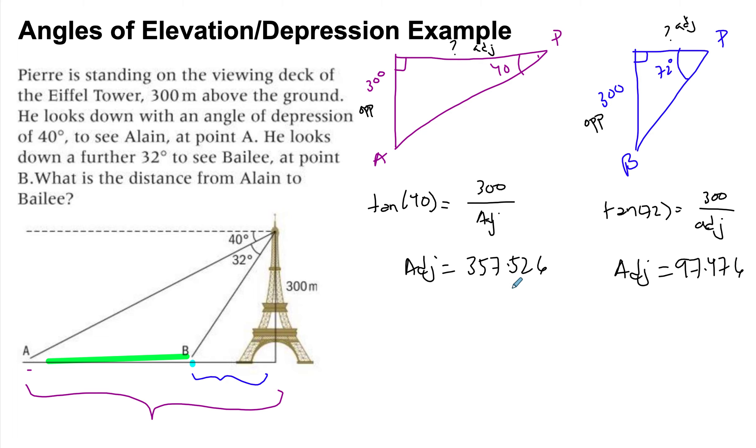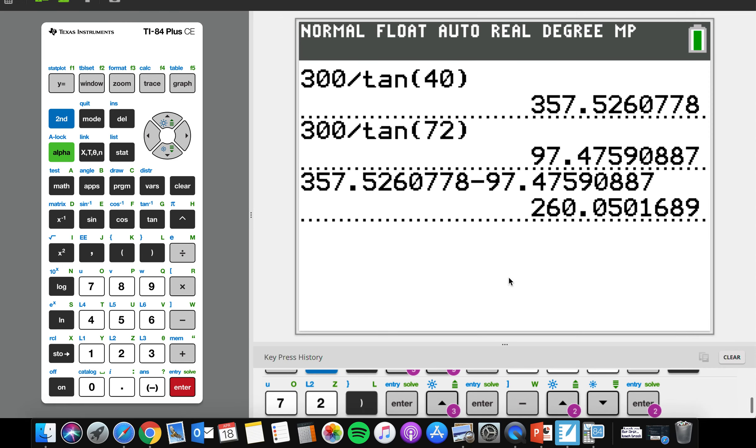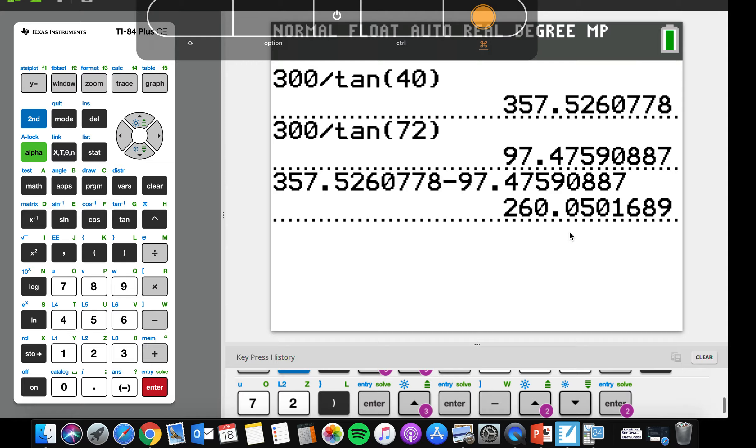And then the second one is 97.476. And then what we need is a subtraction between them. So I'm going to subtract and that should give me the distance between Alain and Bailey. So I've already done the subtraction. So that's 260.